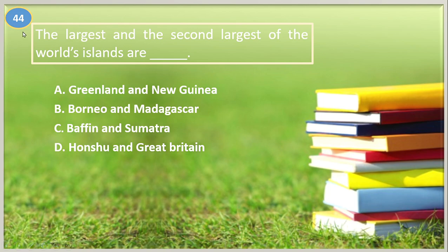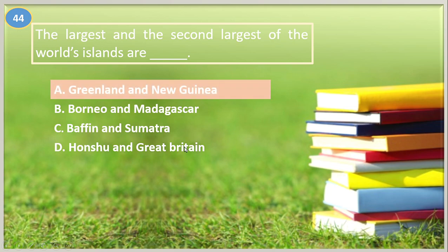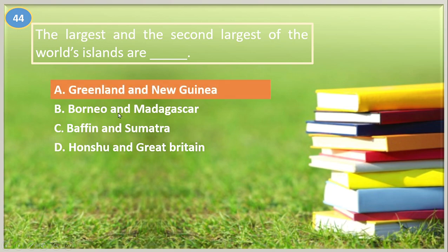Number forty-four. The largest and the second largest of the world's islands are: A. Greenland and New Guinea, B. Borneo and Madagascar, C. Baffin and Sumatra, D. Honshu and Great Britain. The answer is letter A, Greenland and New Guinea.